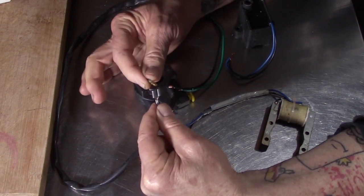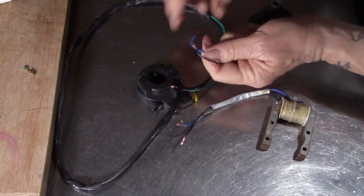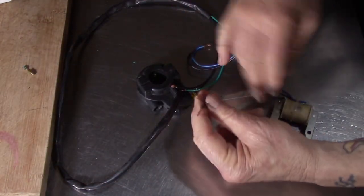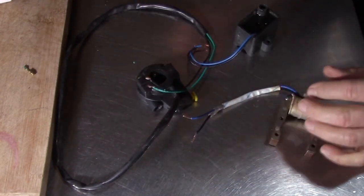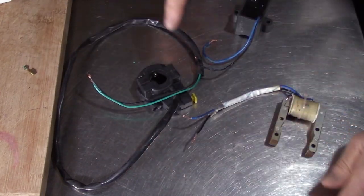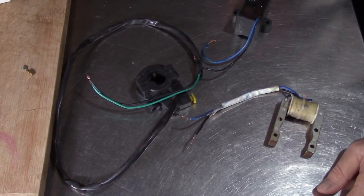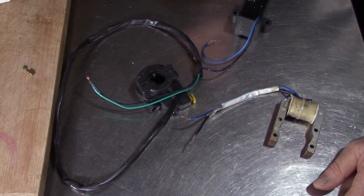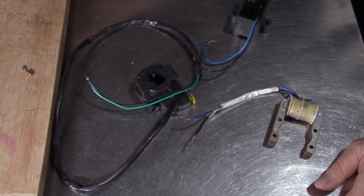So tell you what, let's go ahead and get rid of these connectors completely. Cut them off. Cut them off of the CDI, cut them off of the magneto loop, and cut them off of your kill switch wire here. And what are we going to do? Well, you could use wire nuts to connect everything together, or if you've got a soldering iron, go ahead and solder everything up together.